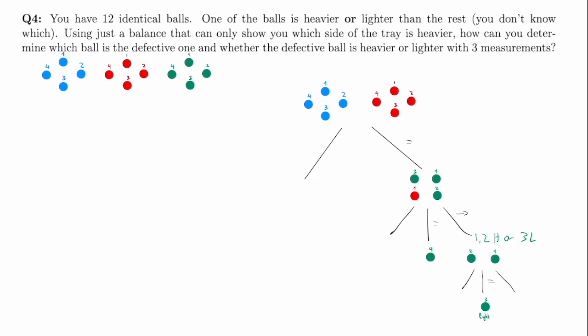Now, if up in the second measurement the scale tips to the left, we know that either green three is heavy, or green one or two is light. Again, we can just take green one and two and weigh them against each other. If they're equal, we know that green three is heavy. If the scale tips to the right, we know that green two is light. And if the scale tips to the left, we know that green one is light.